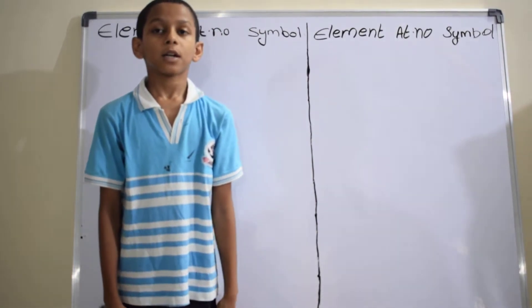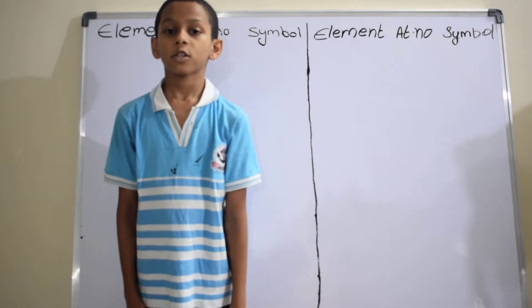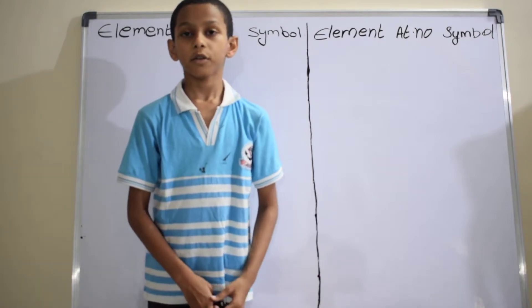Hi, I am Sahab Prabhakar. I would like to explain about the elements of periodic table 31 to 40. Let's start.